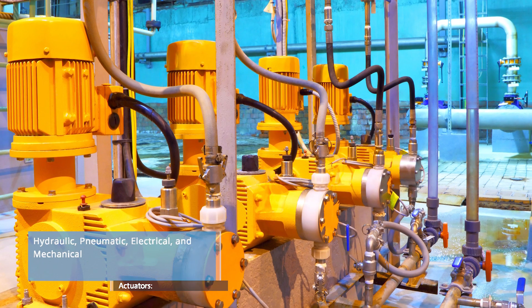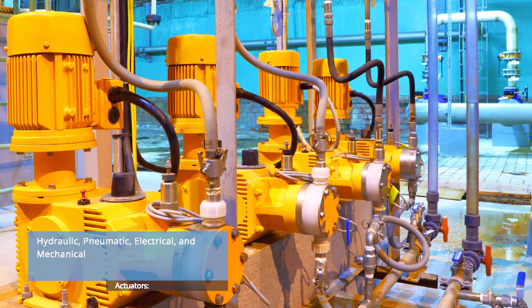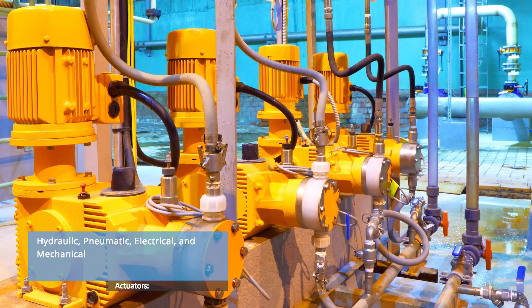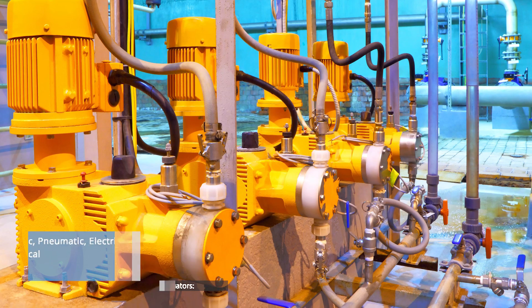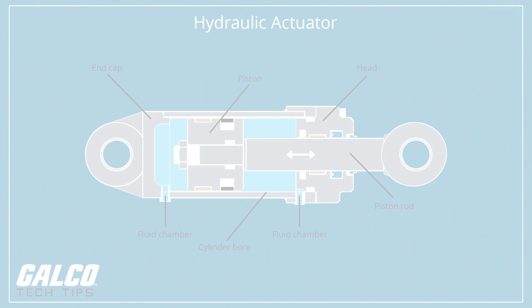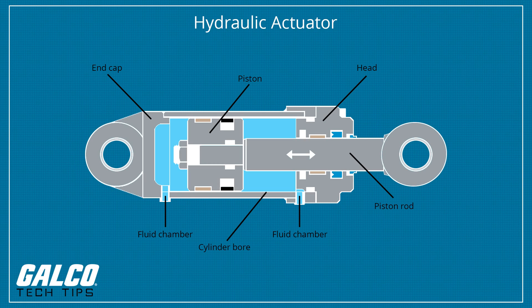There are four main types of actuators: hydraulic, pneumatic, electrical, and mechanical. A hydraulic actuator consists of a cylinder or fluid motor that uses hydraulic power to facilitate mechanical operation. The mechanical motion gives an output in terms of linear, rotary, or oscillatory motion.